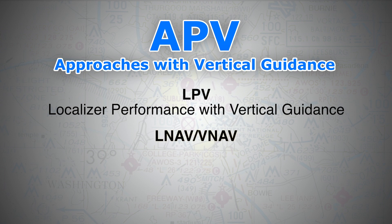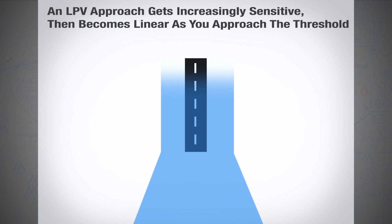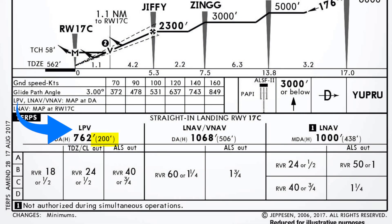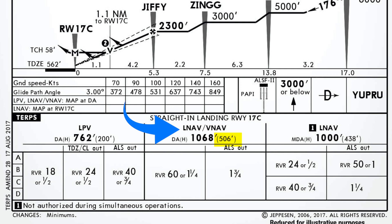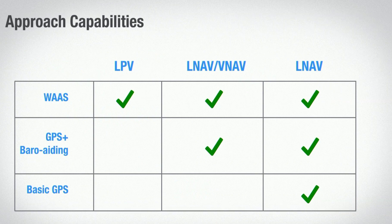Next is LNAV/VNAV — also an APV approach. As the name denotes, it provides both lateral and vertical guidance. There are two major differences from LPV: firstly, LPV sensitivity increases as we get closer to the threshold, making it more accurate with a decision height as low as 200 feet — similar to ILS CAT 1. LNAV/VNAV sensitivity remains almost constant, which is why its minimums are higher. Secondly, you don't need an SBAS receiver to fly an LNAV/VNAV approach — a barometric VNAV system will do.